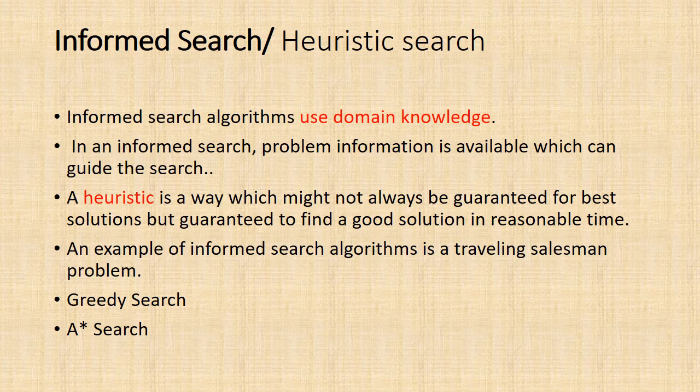Informed search algorithms use domain knowledge. In an informed search, problem information is available which can guide the search. Heuristic means additional information. Consider a case of searching for a house - the address is the source and we use that in uninformed search. But we got a clue like it is a pink colored double story building, the search makes easy. That clue is heuristic information.